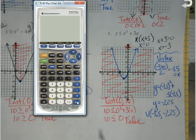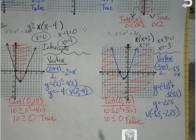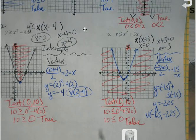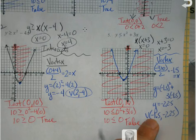Basically: graph it, choose a test point — if it's true, shade inside; if it's false, shade outside. There are only two types with those. The only other thing we have to deal with is one slight tweak. In all the ones we've done, it's been y is greater than or y is less than. What if the y disappears and gets replaced with 0? That's when we actually get to start solving some things.